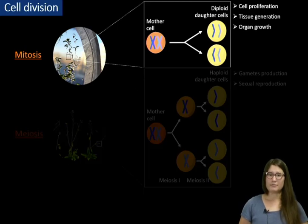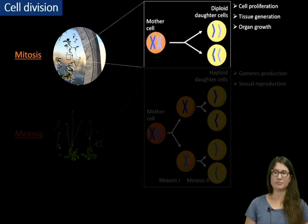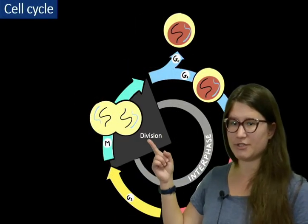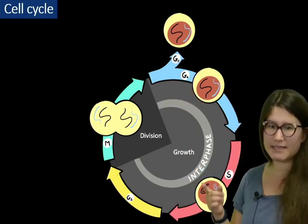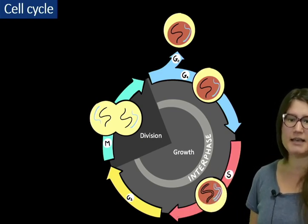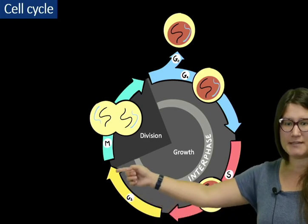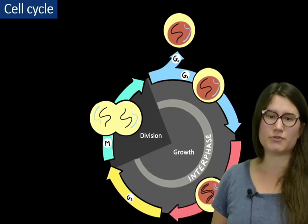Now, if you look closer at mitosis, you can see that the daughter cells have exactly the same genetic background as the mother cell, except for one thing — they have only one sister chromatid for every chromosome. So how do daughter cells become mother cells again in order to continue cell proliferation? Mitosis is actually only part of the cell cycle. After division, cells enter G1 phase when cells grow, and afterwards they enter S phase where the DNA is replicated and every chromatid gets its sister. Then cells enter G2 phase where they grow even more and then become mother cells in order to enter mitosis again and produce new daughter cells.